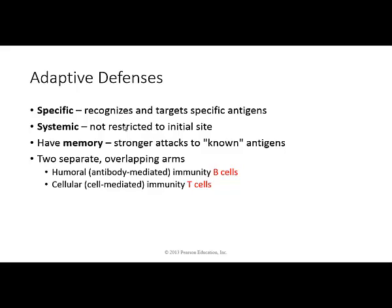And they also have a memory, which means that the second time we're exposed — for example, the first time you have exposure to the chickenpox virus, if you're not vaccinated, you might become sick during the time that your body is responding to that foreign invader. But the second time you're exposed to the chickenpox virus, you have memory cells that will directly begin secreting lots of antibodies and will attack it before you become ill, so you won't become ill on second exposure.